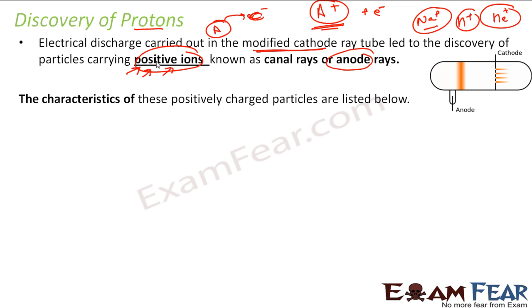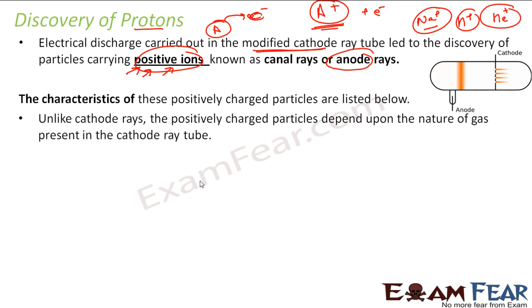These positively charged ions have some properties. For example in the cathode ray tube we had electrons, and you can take electrons from anything - gold, silver, anything. But if you talk about positive ions, sodium ions, hydrogen ions, helium ions, they will all have different properties. Unlike cathode rays where electrons are the same, in this case the positively charged particles depend on the nature of gas. The nature of gas matters.